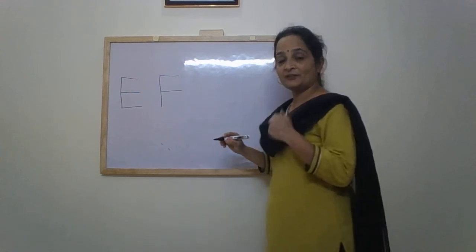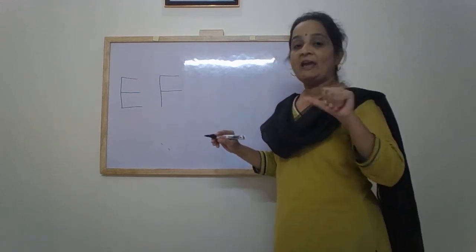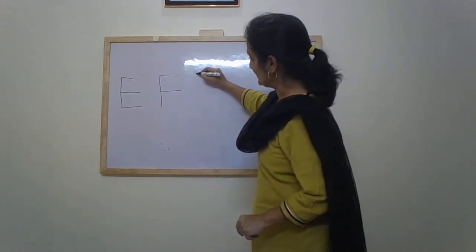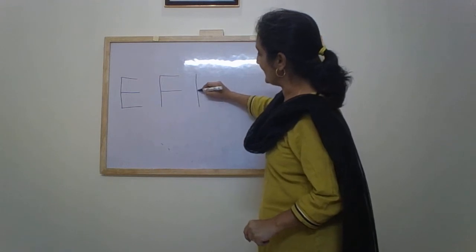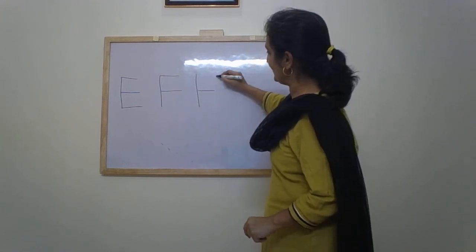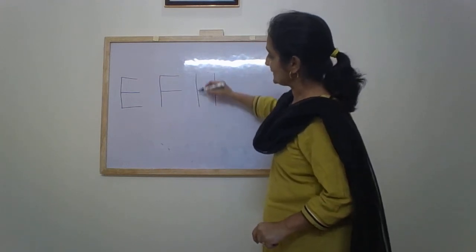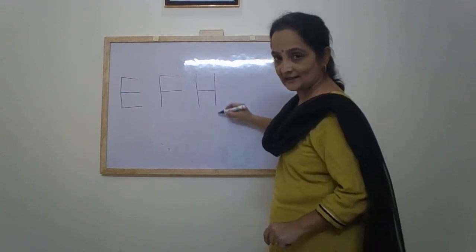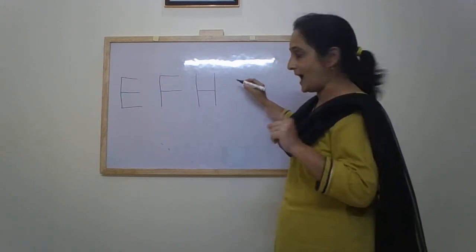After F comes G, then H. For H: standing line, sleeping line, standing line — H.